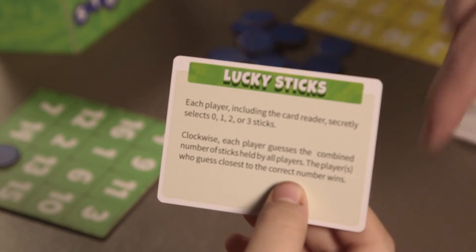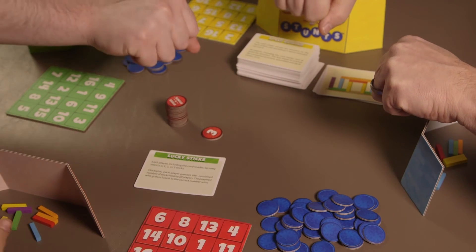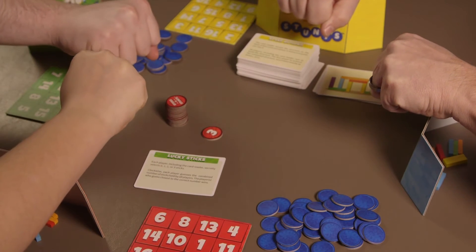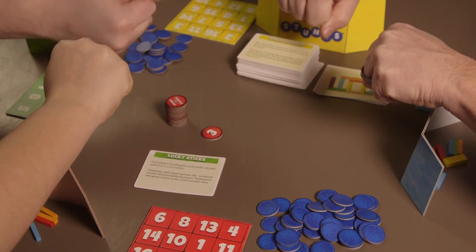For example, if a Lucky Sticks activity card is drawn, players must secretly select sticks and have all the other players guess the quantities or colors of the sticks chosen.